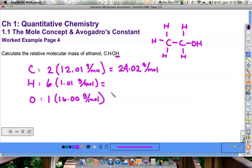Six times 1.01 would be 6.06 grams per mole. And one times 16 is obviously just 16 grams per mole.